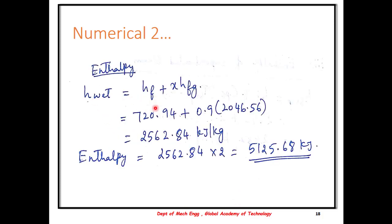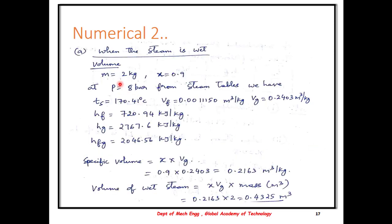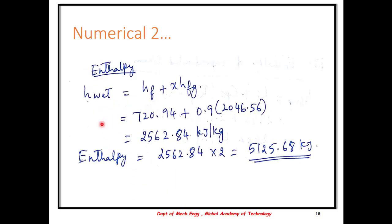For the enthalpy of wet steam, the formula is HF plus X into HFG. Substituting: 720.94 plus 0.9 into 2046, the HF and HFG values are taken from the steam tables at 8 bar. The specific enthalpy is 2562.84 kJ per kg. Therefore, for 2 kg of steam, the total enthalpy becomes 5125.68 kJ. This completes the solution for the first case — specific volume and enthalpy for wet steam.